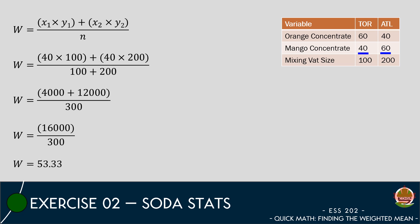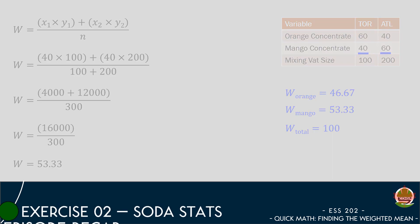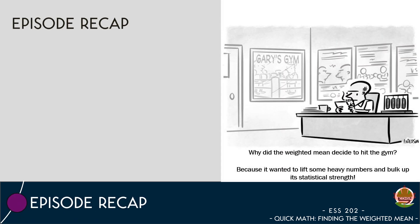We can check our math by adding the weighted mean of the orange juice and the weighted mean of the mango juice together which equals 100%. In today's episode, we learned how to calculate the weighted mean. Some important things to remember about weighted means are: the weighted mean is used when data points do not have the same weight or frequency.